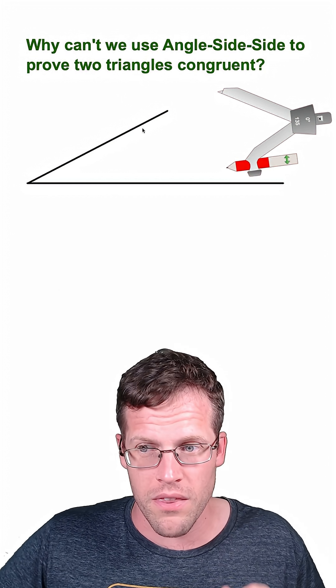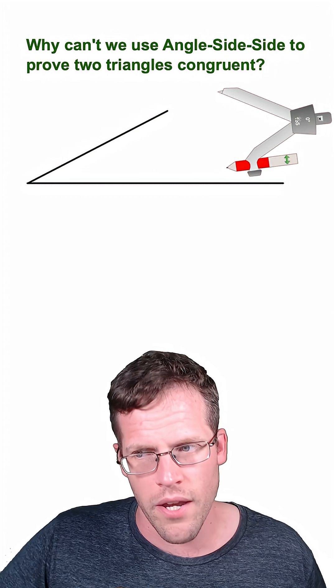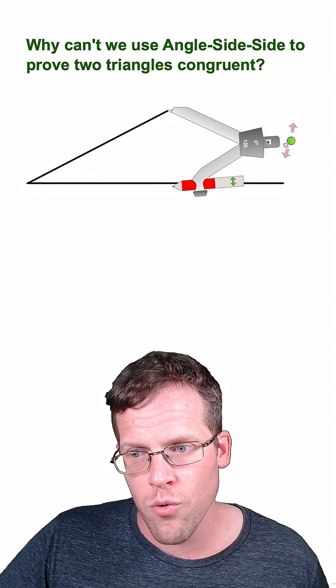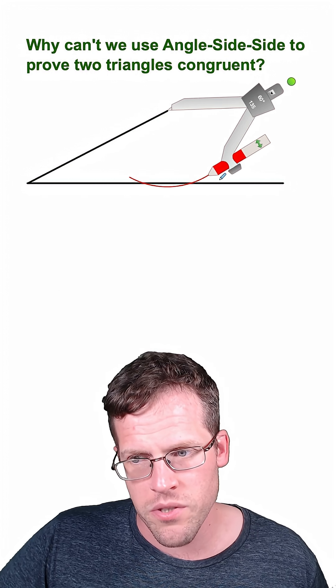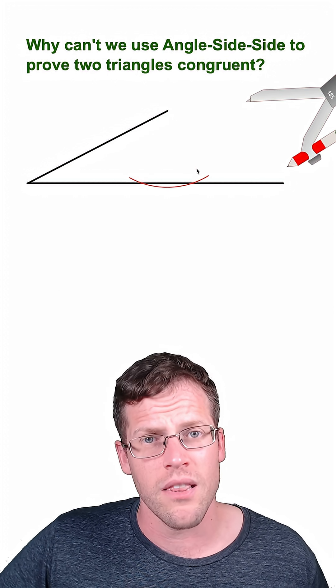So what you do with this method is you start out with two line segments like this, and you can have an acute angle between them. You place the compass over at one end and open it just enough so that when you swing an arc, it's going to hit the bottom line segment twice. And now I'll just connect these pieces and label.